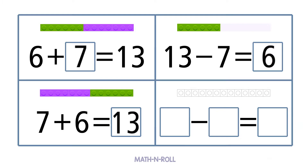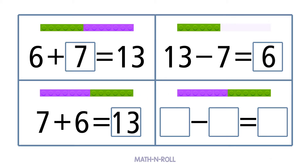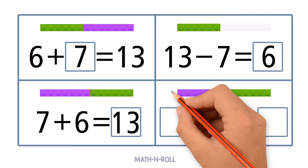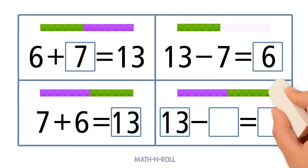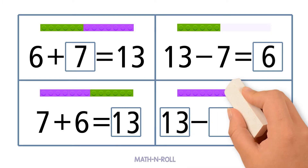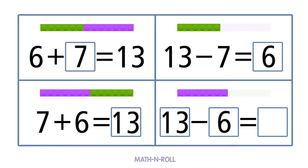The next related fact has 3 blanks, also subtraction. So we start with our largest number, 13, but this time we subtract 6 instead of 7. 13 minus 6 equals 7. These are all related facts, making a fact family.